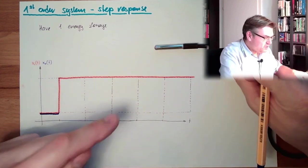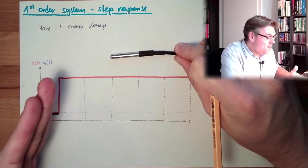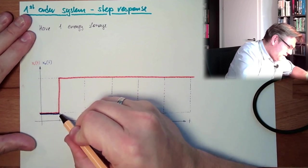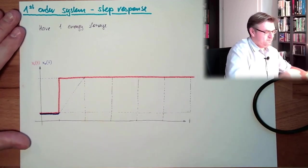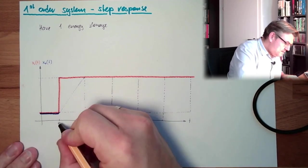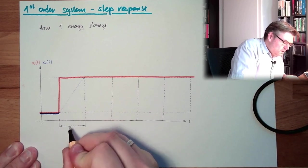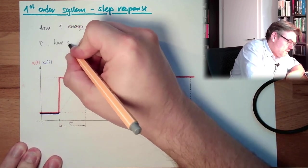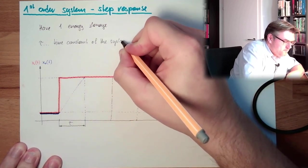So if the temperature difference between the sensor and the surroundings is high, we will heat up very fast. And the tangent at the beginning, that's the tangent at the beginning, we will hit the end value after a so-called time constant. So this time period is called tau. Tau is the time constant of the system.